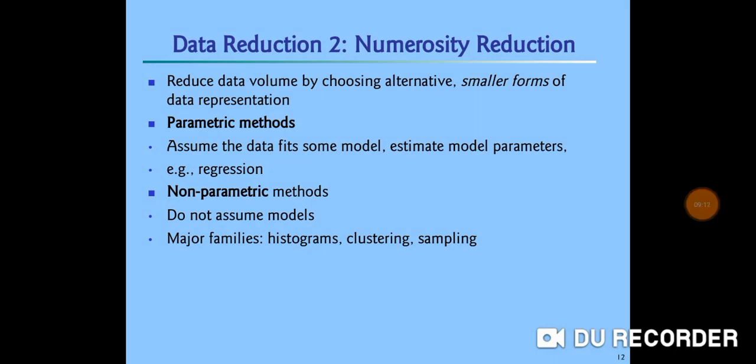Second method is numerosity reduction. Here, instead of using whole data set, smaller part of data set is used as a sample. It is simply data reduction method. It reduces data volume by choosing alternative or smaller forms of data representation. There are two methods of numerosity reduction, parametric method and non-parametric method. Parametric method assume the data fits some model or estimate model parameters. Example is regression. Non-parametric method do not assume models. Some major families of these methods are histograms, clustering, sampling, etc.